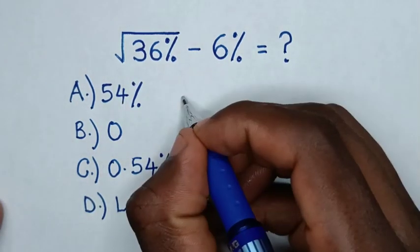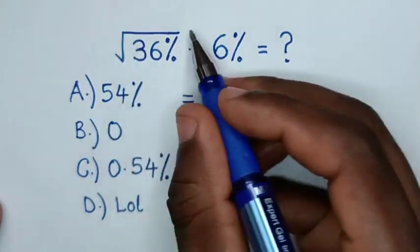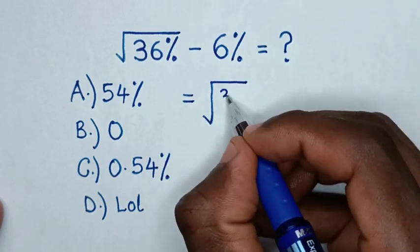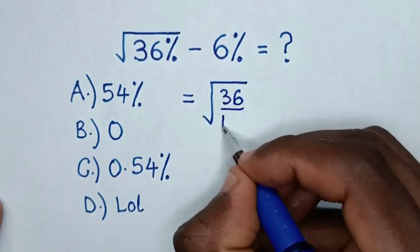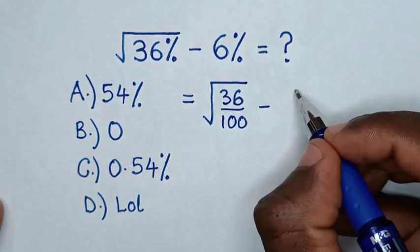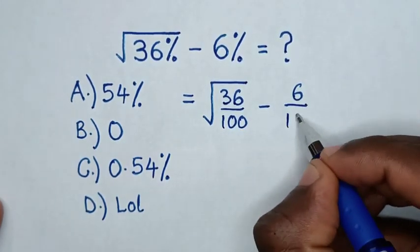This expression equals the square root of 36%, which is the same as 36 over 100, minus 6%, which is the same as 6 over 100.